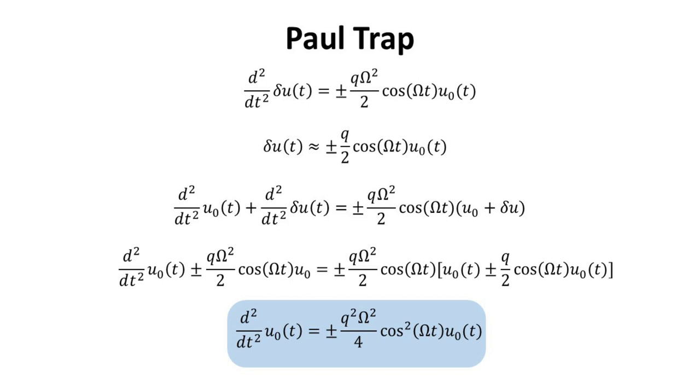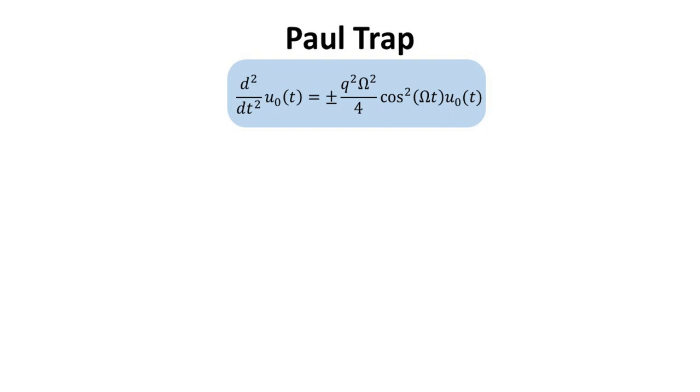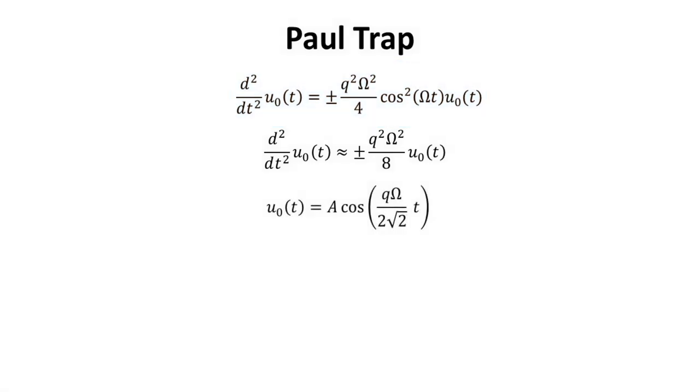Going through the simple algebra, we reduce to the following differential equation for the slow-motion part, U0 of t. To solve this differential equation for U0 of t, we recall that a differential equation of the following form can be approximately solved if alpha is a much faster varying function in time than f. In this case, we can replace alpha of t by a time-averaged function alpha bar of t. The time-averaged cosine squared of omega t over 1 period is equal to 1 half. Hence, we obtain the following approximate differential equation. This is a known differential equation whose solution is an oscillatory function like a cosine. Thus, U0 of t is an oscillating function with frequency equal to q omega over 2 times square root of 2.